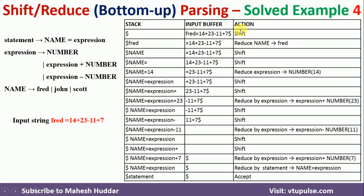We start with the stack, input buffer, and action columns. Initially the stack contains nothing and the input buffer contains the full input. Because we don't have anything on the stack we cannot apply any rule, so we perform the shift operation first — fred is pushed onto the stack top.